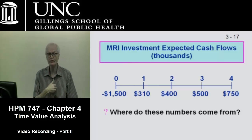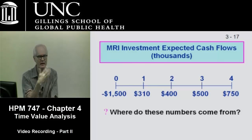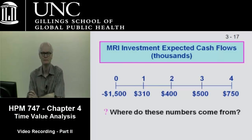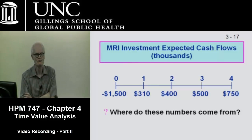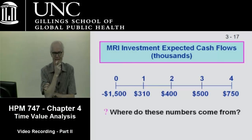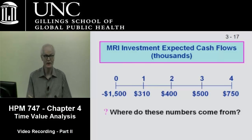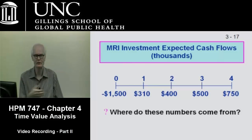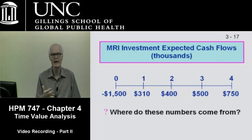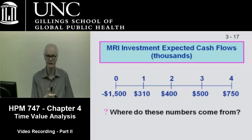The MRI also generates cash outflows. Those include maintenance and repair on the machine, electricity — MRIs use a lot of electricity — and payroll: the radiological technicians, receptionists, billing staff, IT staff, all the labor required to run the MRI. So it's really easy to put up these four numbers, but in fact there's a lot of work and assumptions that go behind those numbers. For now, we're just going to assume they're right.